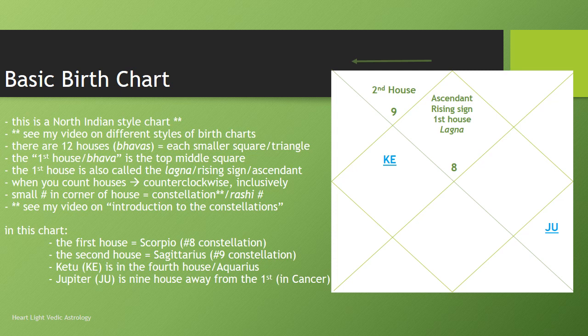So let's just look at this. The first house is Scorpio because there's a little eight here and the eighth constellation of the zodiac is Scorpio. The second house is the ninth constellation of the zodiac, which is Sagittarius. So if we're counting counterclockwise and inclusively: I have this little symbol KE — this represents Ketu, the south node of the moon. Based on what I've told you so far, which house is Ketu in? Well, you start at the lagna — lagna is number one — you count backwards: two, three, four. Ketu is in the fourth house in this particular chart.